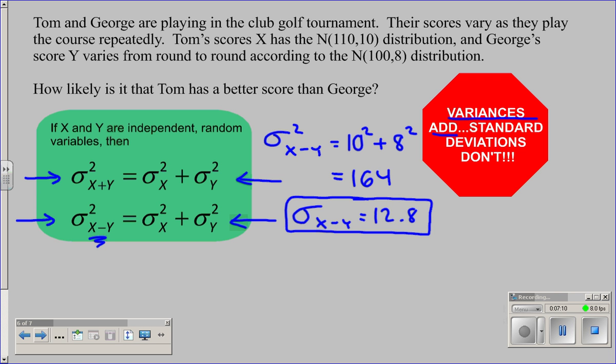One last bit of information we need is what happens with the shape of the distributions. If we have two normal independent distributions, their sum or difference will also be normally distributed. So we'll be safe using a normal distribution here. How does this work when we put it all together?